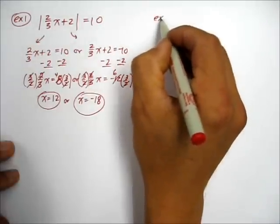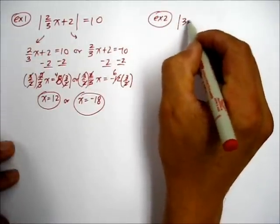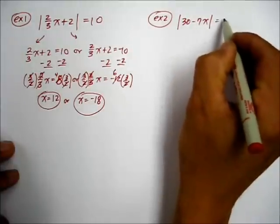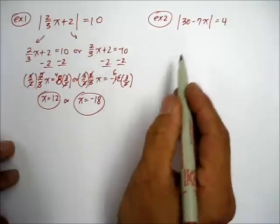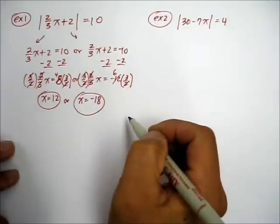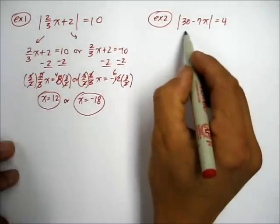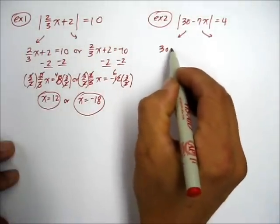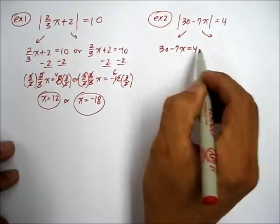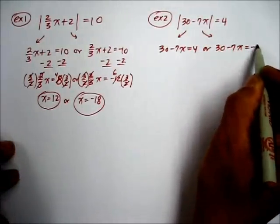Now here's Example 2: absolute value of 30 - 7x = 4. You could put the video on hold and try to solve this on your own. To solve this one, again there are two possible solutions: 30 - 7x = 4, or 30 - 7x = -4.